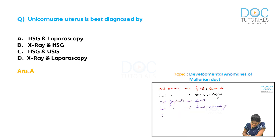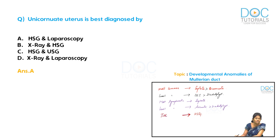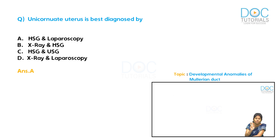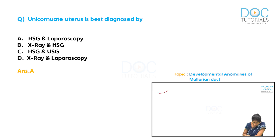The investigation of choice for suspected uterine anomaly is HSG (hysterosalpingography), but HSG is not the gold standard because it cannot differentiate between the two most common uterine anomalies: septate and bicornuate uterus.